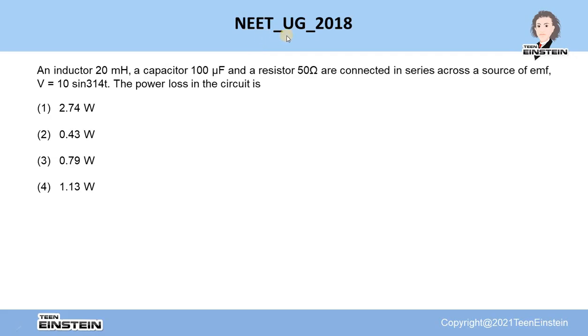Hello students, let us solve a problem from NEET UG paper 2018. In this problem, an inductor of 20 mH, a capacitor of 100 microfarad, and a resistor of 50 ohm are connected in series across a source of emf V = 10 sin(314t).